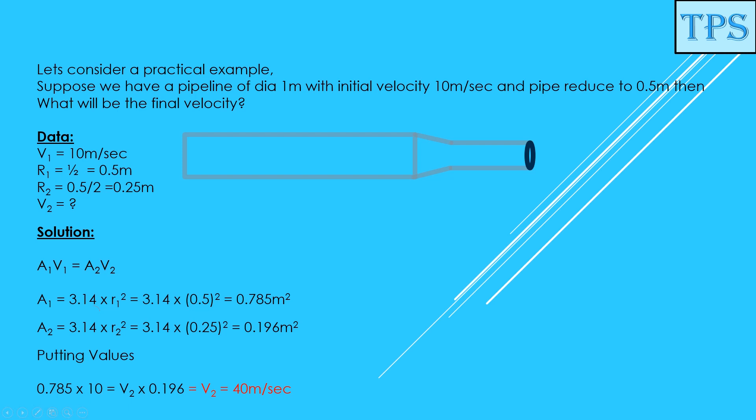Now putting the values in the continuity equation: 0.785 multiplied by 10 equals V2 multiplied by 0.196. Solving this equation, we get V2 equals 40 meters per second.